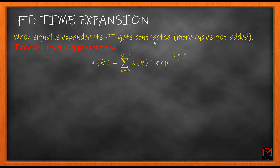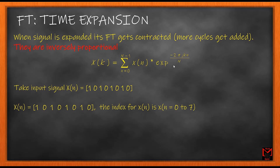The time expansion property is a very important property in Fourier transform and we will see its application in coming lectures. When the signal is expanded its Fourier transform gets contracted — that is the property we are going to explain and see in detail. Here we have our Fourier transform formula: X of k equals the sum of x(n) multiplied by the exponential. Our sample input signal is packed — the spacing between the ones is a single zero, so the non-zero value is 1 and the spacing between two such values is a single zero.